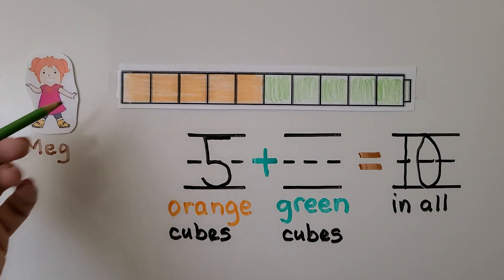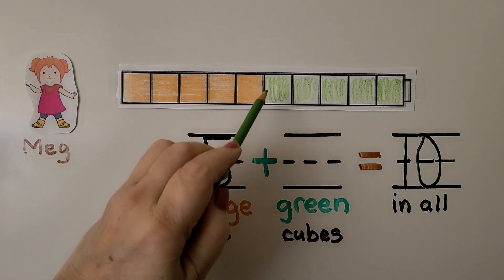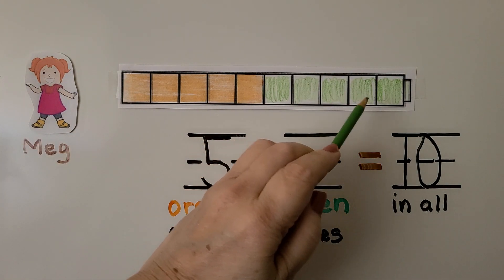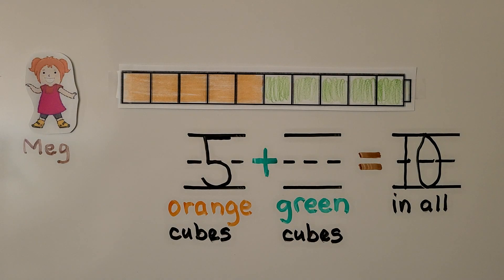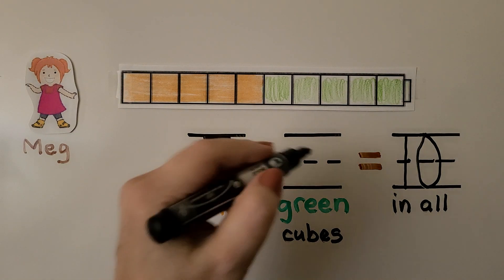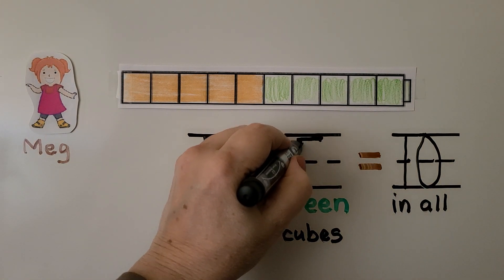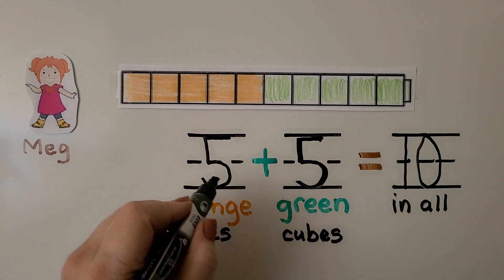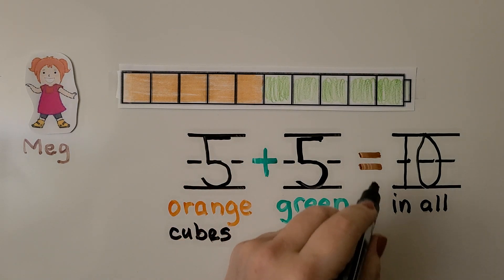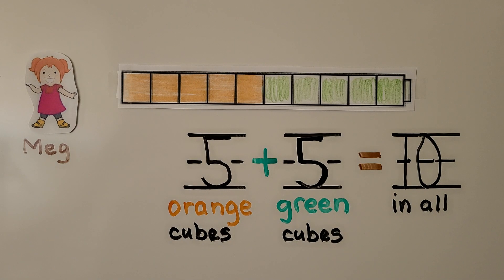And how many green ones did we color? We colored one, two, three, four, five. Five orange cubes, five green cubes. Five plus five is equal to 10. We can make a 10 with a 5 and a 5.